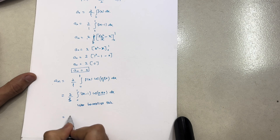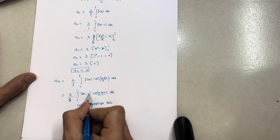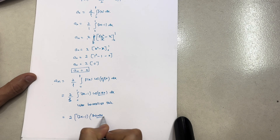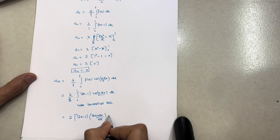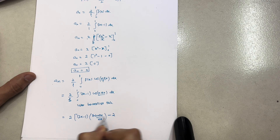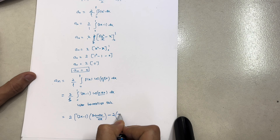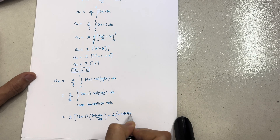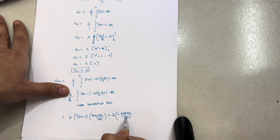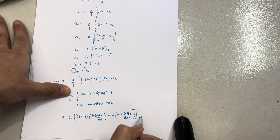Applying Bernoulli's rule: take (2x − 1) as it is, times the integration of cos(nπx) which is sin(nπx)/(nπ); then minus the differentiation of (2x − 1), which is 2, times the integration of sin(nπx), which is −cos(nπx)/(n²π²). The limits run from 0 to 1.